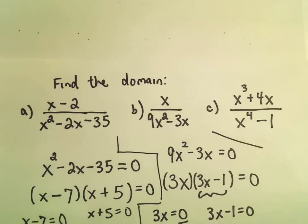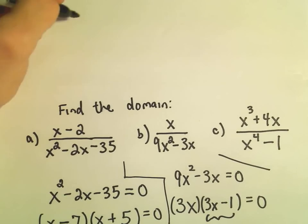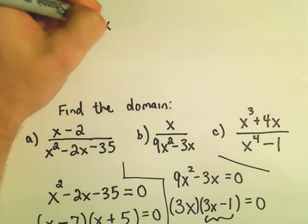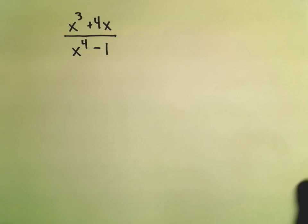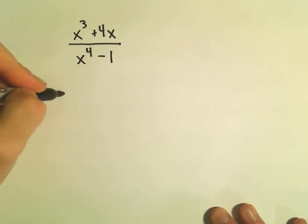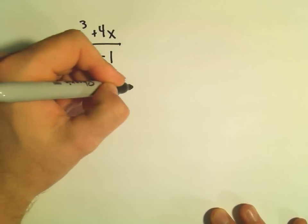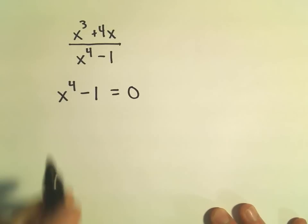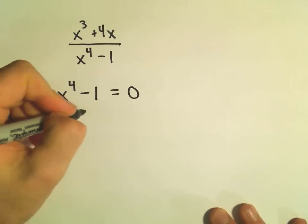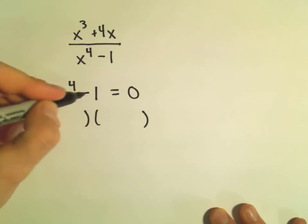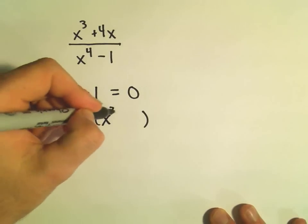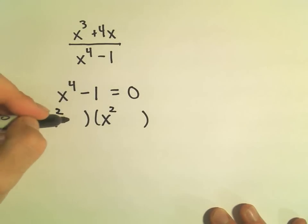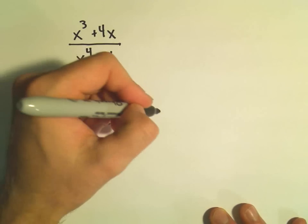So let's do our last example here. Let me copy it down since I ran out of room. So (x³ + 4x) over (x⁴ - 1). So same thing. Let's just find the domain of it. So I'm going to set the denominator, x⁴ - 1 equal to zero. And in this case, I believe we could factor this, actually. To get the x⁴, so this is a difference of perfect squares. So to get the x⁴, we could use x² and x². And then to get the negative 1, we could simply use negative 1 and positive 1.